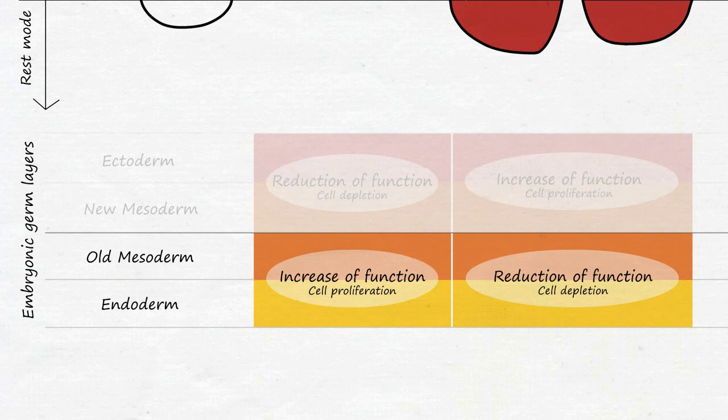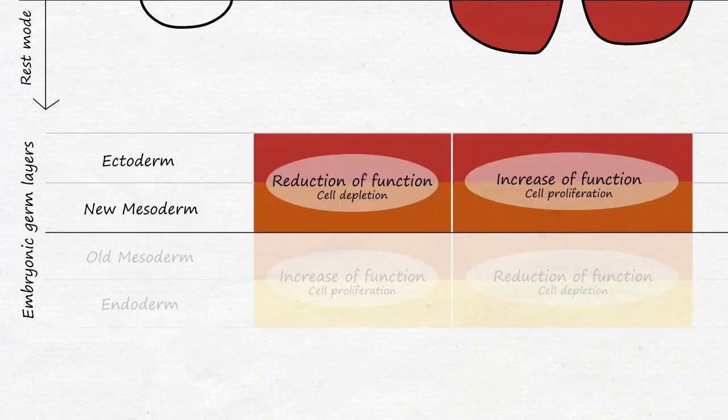All tissue belonging to the endoderm or old mesoderm belong to the first group. All tissues belonging to the new mesoderm or ectoderm belong to the second group.